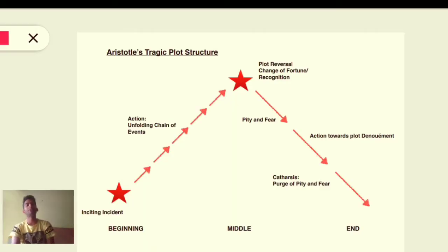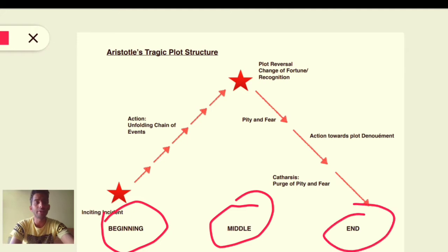Hello everyone, you are most welcome again on my channel. In this video we are talking about Aristotle's tragic plot structure. As you can see here, we have a beginning, a middle and an end. Aristotle says that for a complete tragedy, we must have a beginning, a middle and an end.